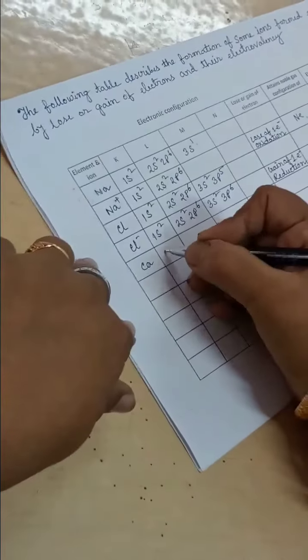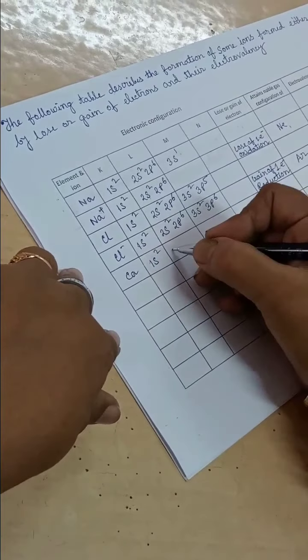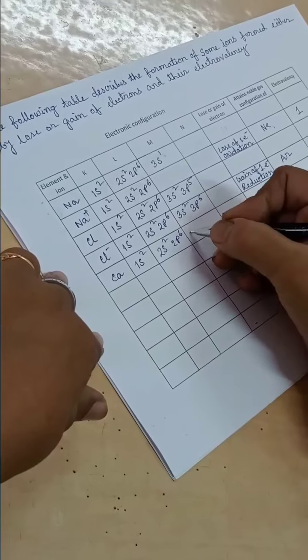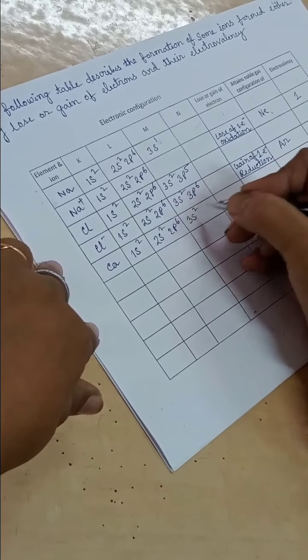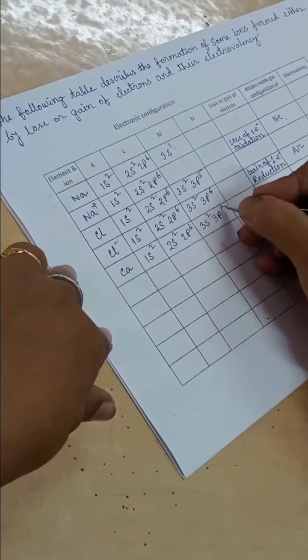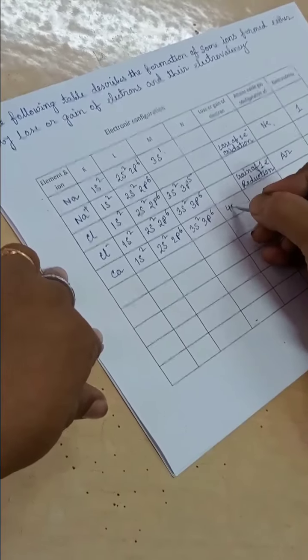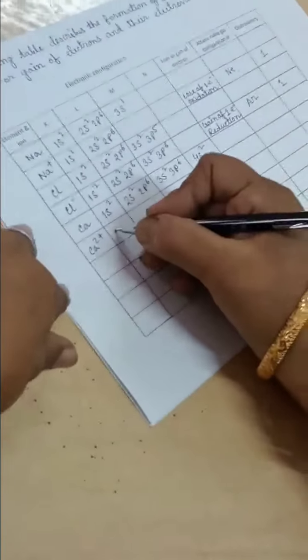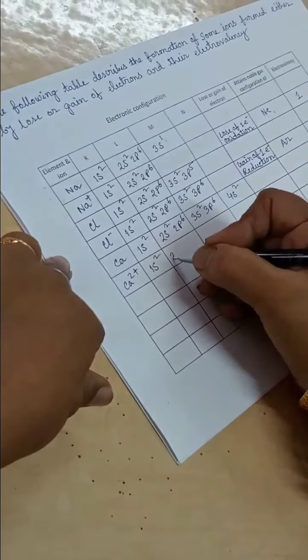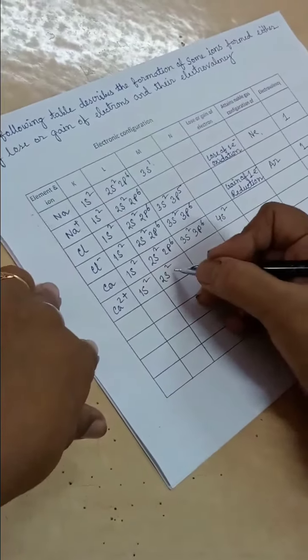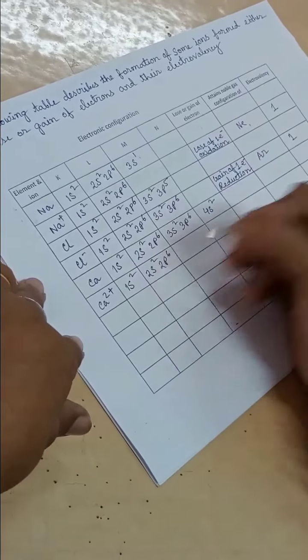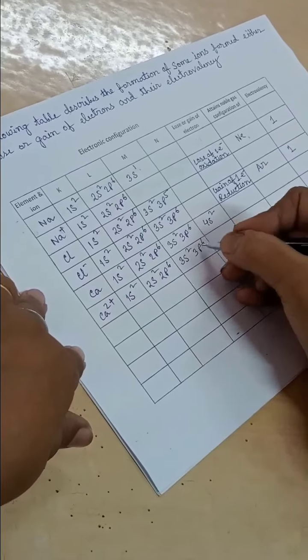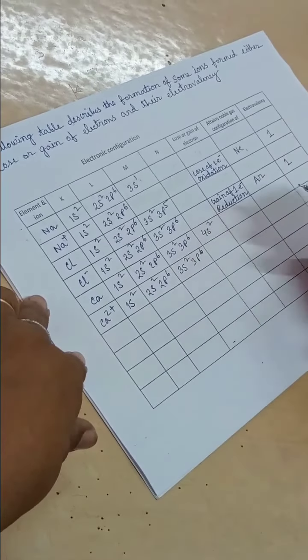Calcium: 1s2 2s2 2p6 3s2 3p6 4s2. Calcium 2+: 1s2 2s2 2p6 3s2 3p6. Electrovalency: 2.